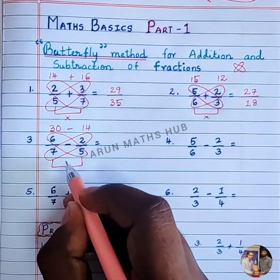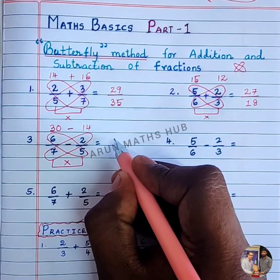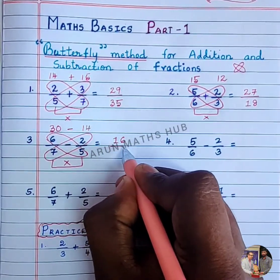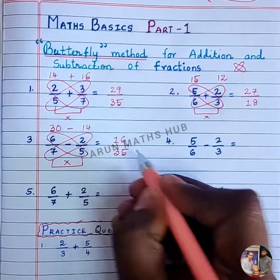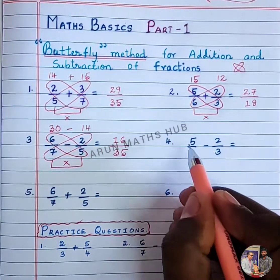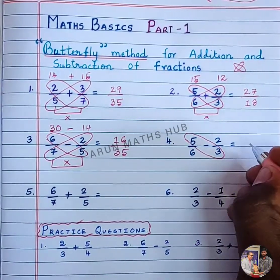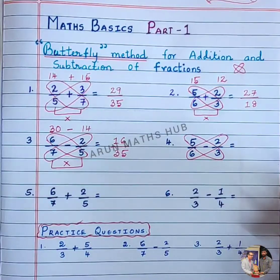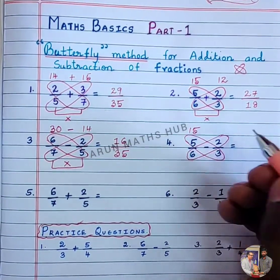Then for the denominator, 7 into 5: 30 minus 14 is 16, divided by 7 into 5, which is 35. One more example: 5 into 3 and 6 into 2. What is 5 into 3? 5 into 3 is 15.